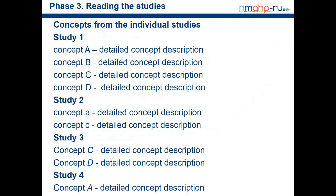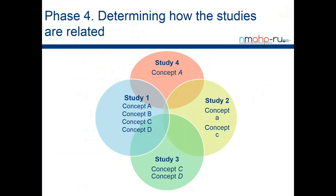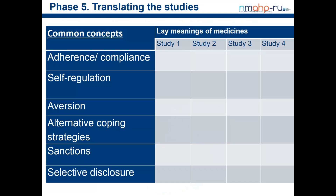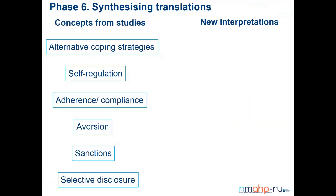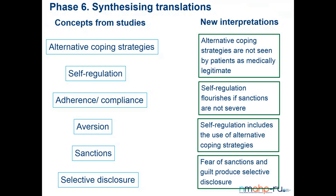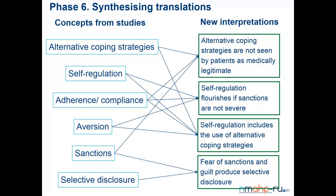The concepts from individual studies are then translated. Once you've read them you get an idea of what's similar and different. In this example, the common concepts across studies included adherence and compliance, self-regulation, aversion, alternative coping strategies, sanctions, and selective disclosure — seen across some but not all studies. Thinking about telling that coherent story, new interpretations from those concepts are shown with arrows, building up a new interpretation by reconfiguring the evidence.